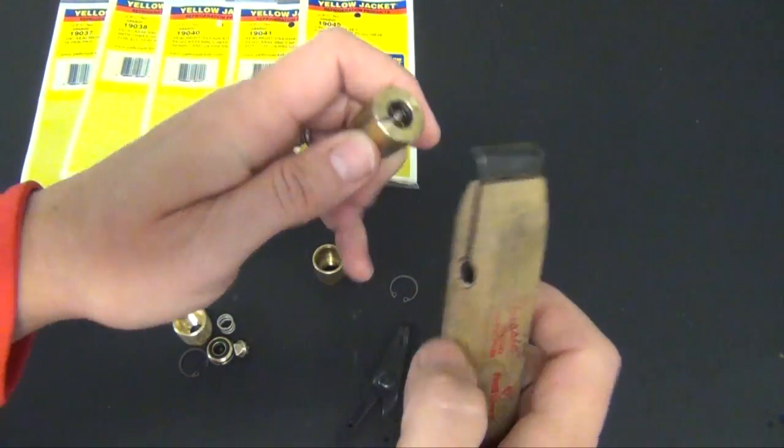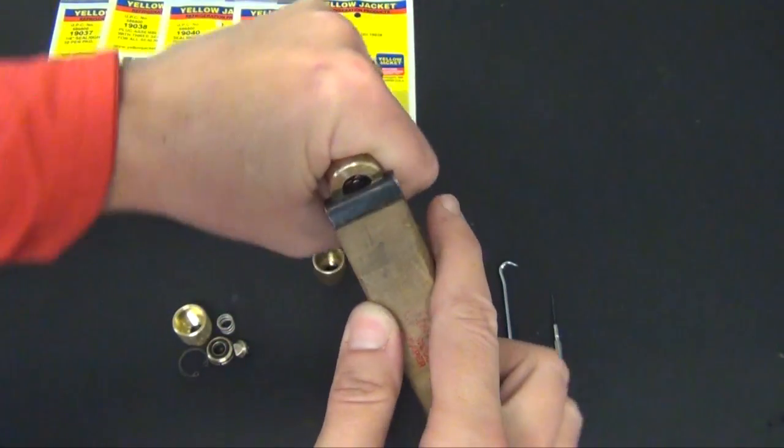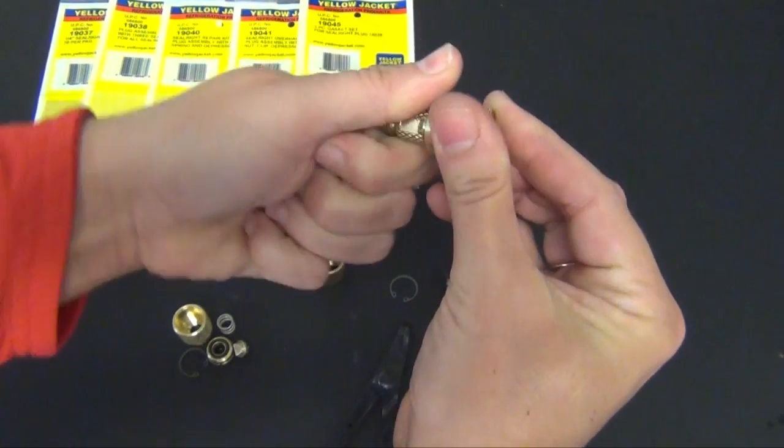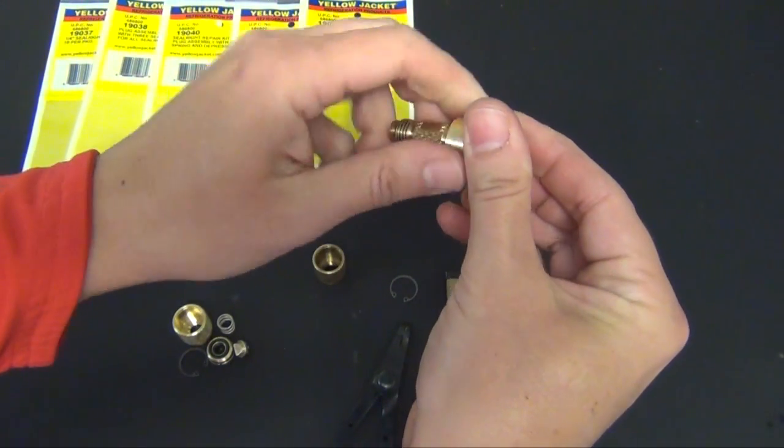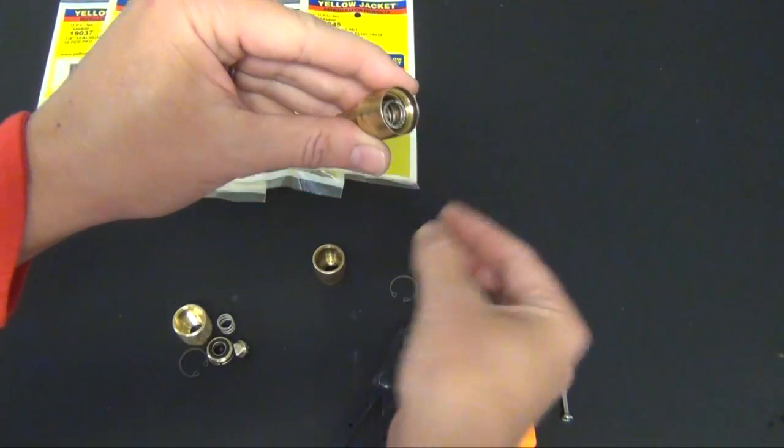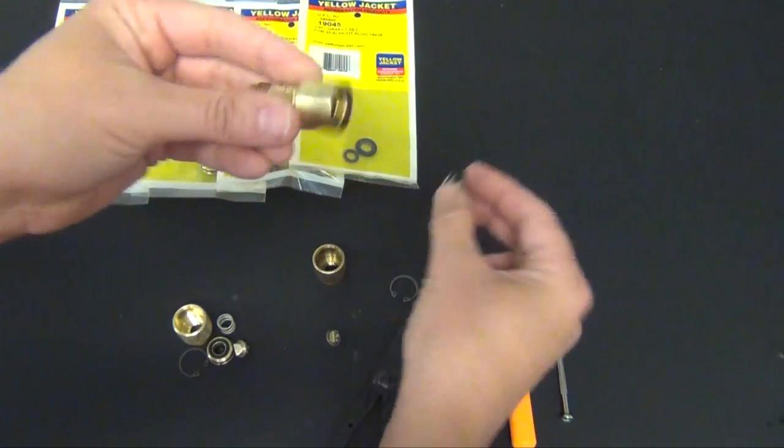You'll take your straight edge and turning counterclockwise we'll remove the retainer plug and then the depressor and the spring.